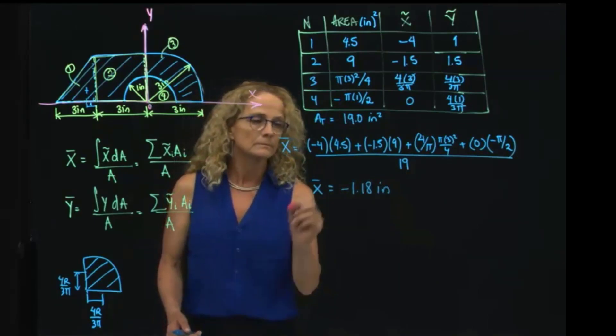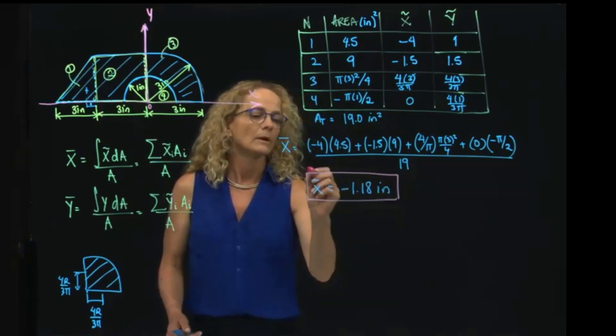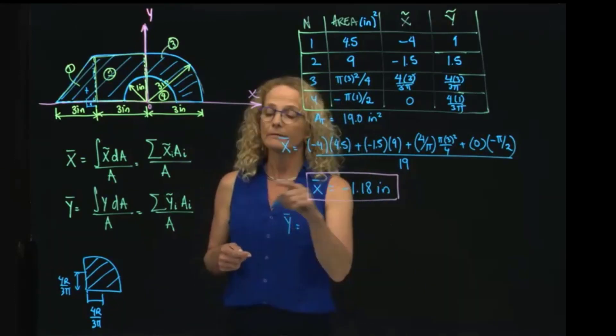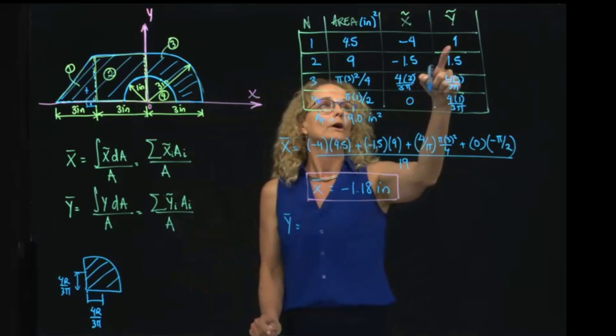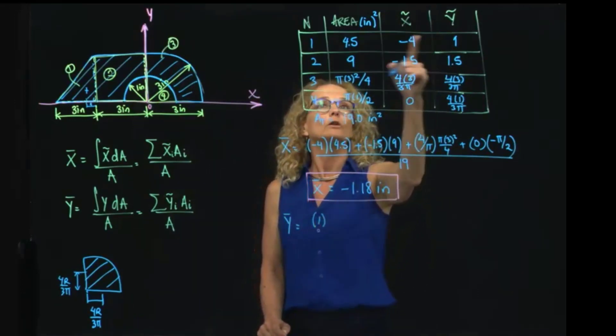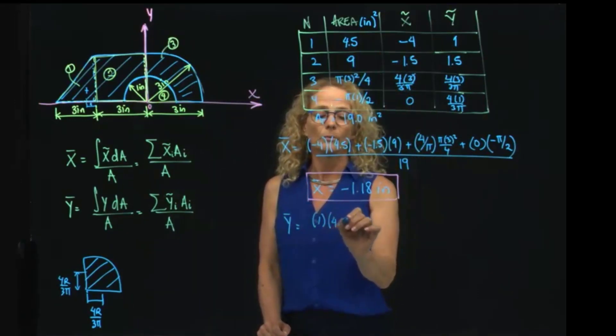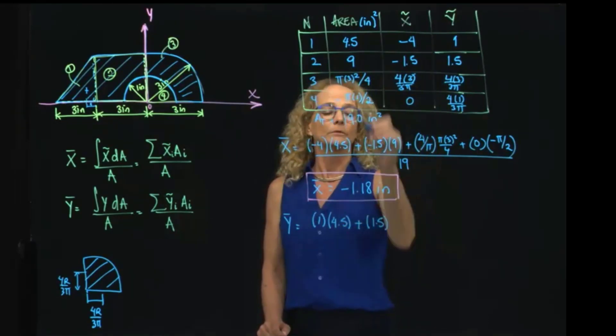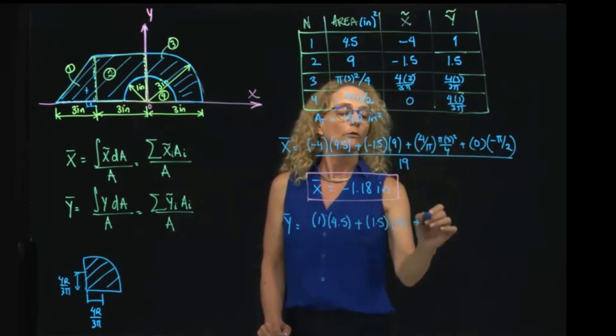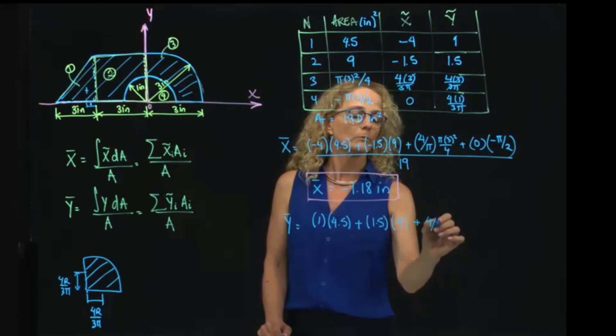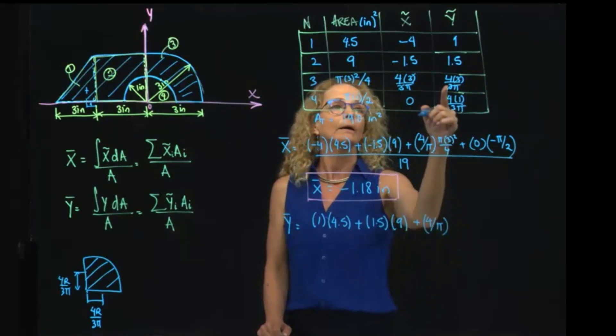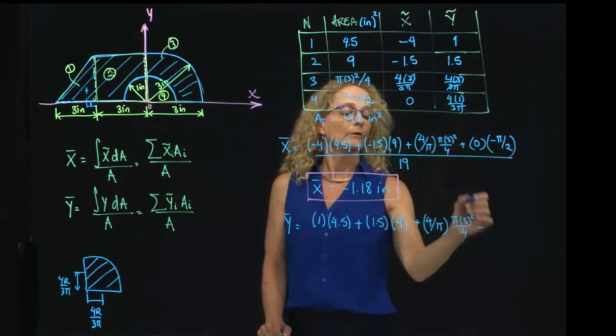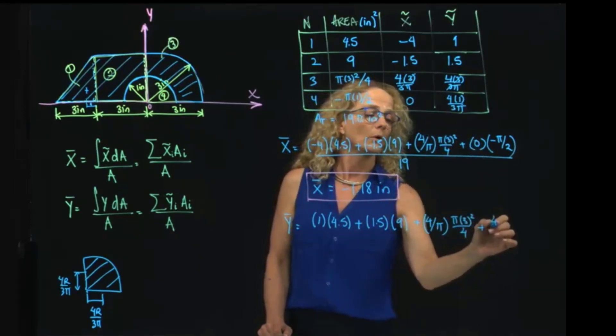And I will do exactly the same for y. In this case, I apply this equation, so I do 1 times the local area is 4.5, then plus 1.5 times 9, plus 4, well this 3 also goes with that one, so I can write π, 4 over π multiplied by π 3 squared divided by 4, and then I have plus 4 over 3π, and in this case I have to multiply by this negative area because I'm subtracting the area from the figure, and divided by the total area which is 19.